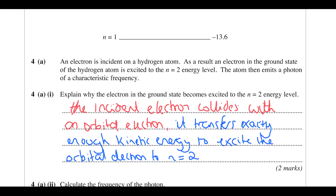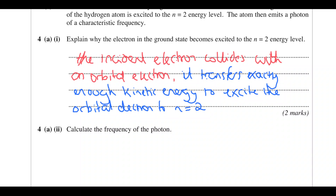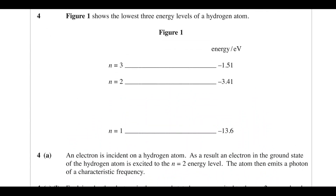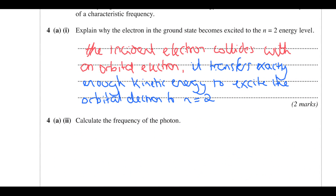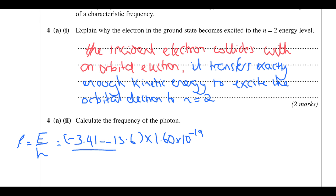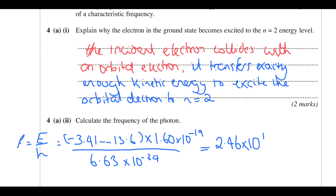The incident electron just needs to have at least that amount of energy to do it. Now calculate the frequency of the photon — we're going from −13.6 to −3.4, so −3.4 minus −13.6, in electron volts, multiply by 1.6 times 10 to the minus 19 to get energy in joules, then divide by Planck's constant 6.63 times 10 to the minus 34. That gives an answer of 2.46 times 10 to the 15 hertz.